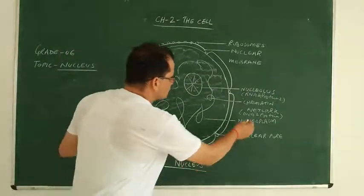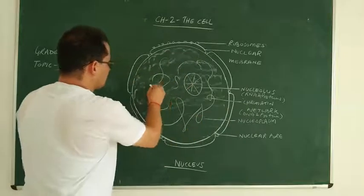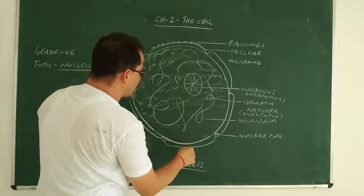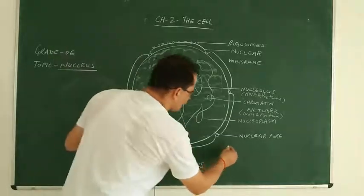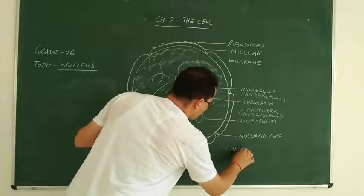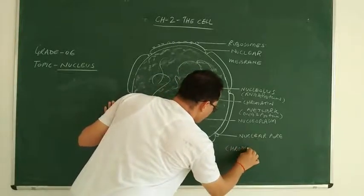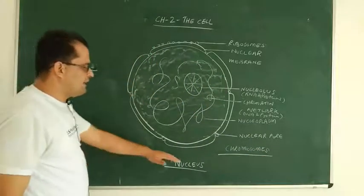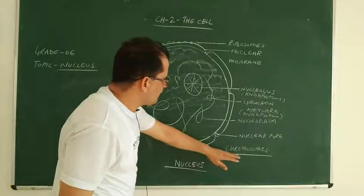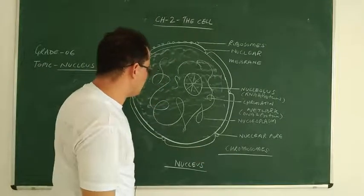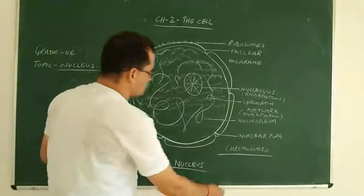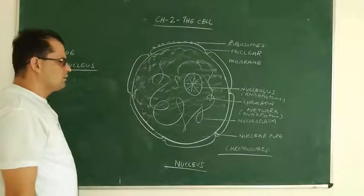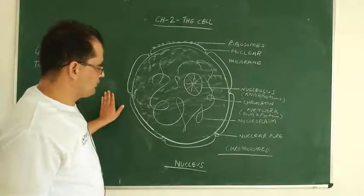Later on, these chromatin networks — the thread-like structures inside the nucleus — condense to form chromosomes. These chromosomes carry the hereditary information from parents to offspring, and they are responsible for carrying genetic information during the process of cellular reproduction.